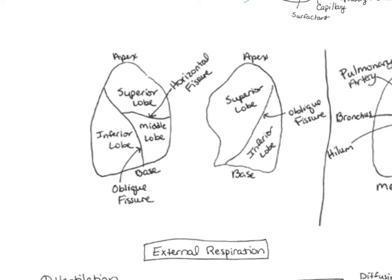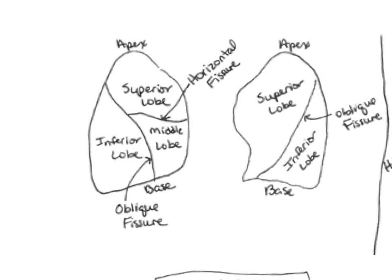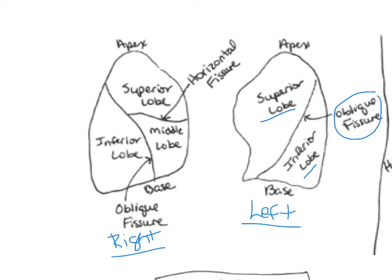The lungs: the left lung has two lobes — superior and inferior — divided by an oblique fissure. Each lung comes to a point at the top called the apex, and is flat at the bottom called the base. The right lung has a superior lobe, inferior lobe, and also a middle lobe. The left lung can't have a middle lobe because there's a notch where the heart sits.